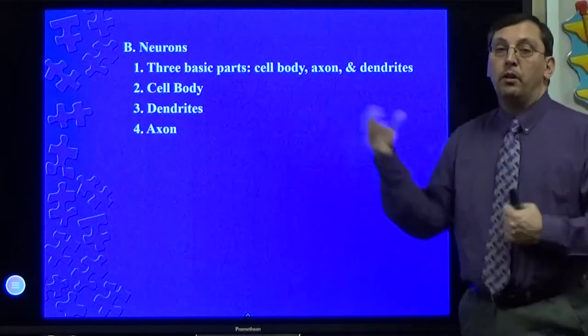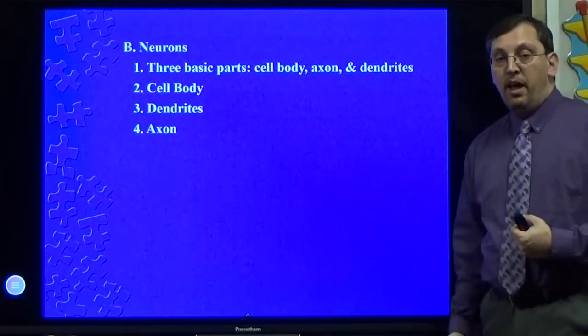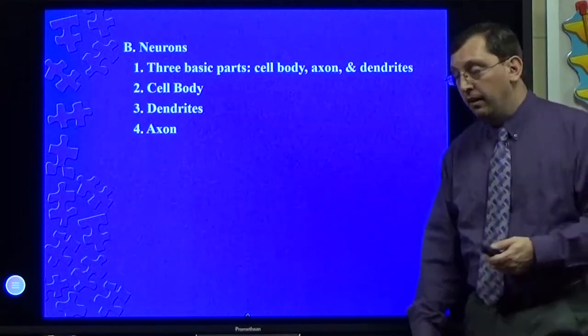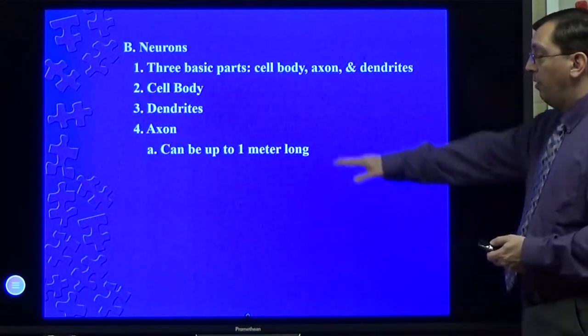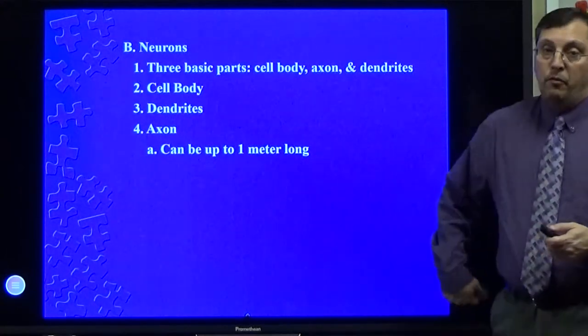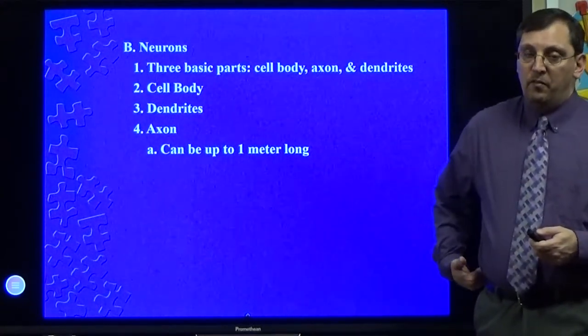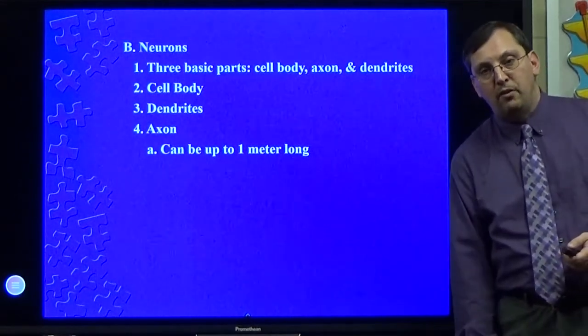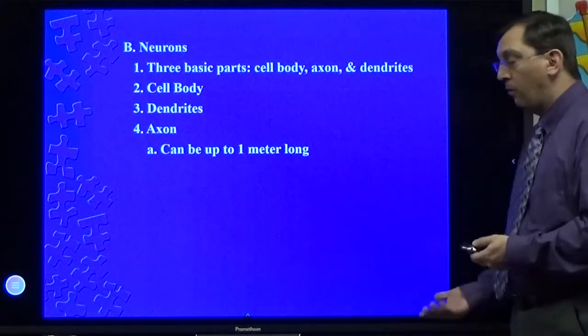The axons may be extremely long. In the case of something in your leg, they may be almost two to three feet in length, going down the entire length of the leg. They could be up to a meter in length. So if you have a small cell in the lower back receiving information to send to your foot, it's going to send a signal all the way down your leg to your foot to make it work.